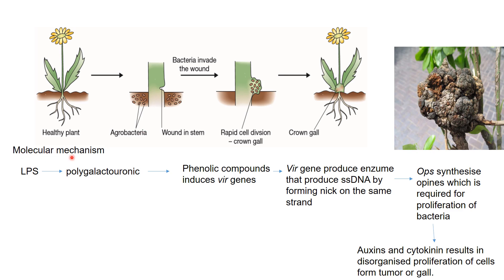The molecular mechanism of crown gall disease: the LPS, that is the lipopolysaccharide portion of the bacterial cell wall, binds with polygalacturonic acid that acts as a receptor for the LPS. This polygalacturonic acid is present in the cell wall of the plant and acts as a binding site for the bacterium. After binding, a wound occurs inside the stem, and this wounded portion of the plant produces phenolic compounds which induce the vir genes.